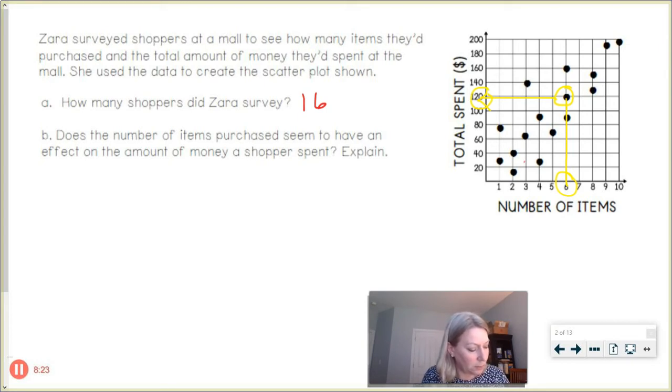All right, does the number of items purchased seem to have an effect on the amount of money a shopper spent? Okay, well if I look at those dots and how they are, does it look like there's some kind of trend to them? Either upwards trend, downwards trend, a wavy trend, a straight across trend, a vertical trend. All right, it looks to me, although the dots are kind of scattered as you can see here, it kind of looks to me as if the more items that were purchased, and this could have been any like small price or large price items, but the number of items purchased makes the total spending go up. So it does look like the number of items purchased is affecting how much money you'll spend and that makes sense to me.